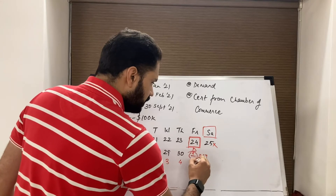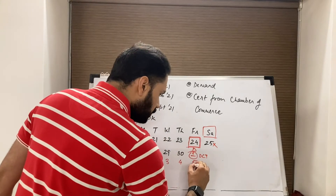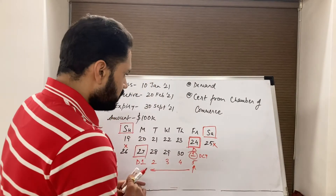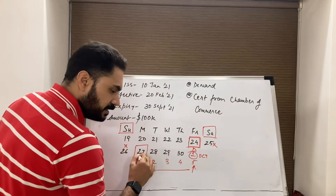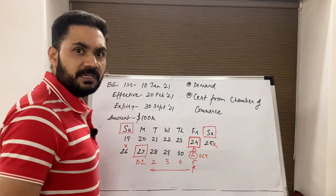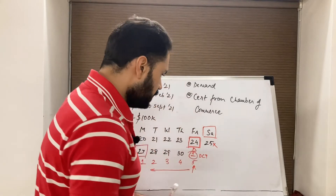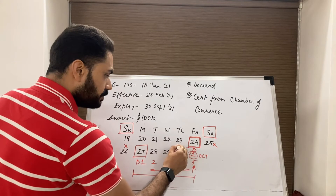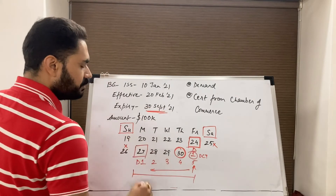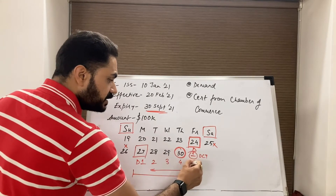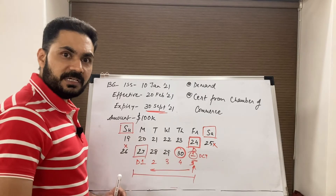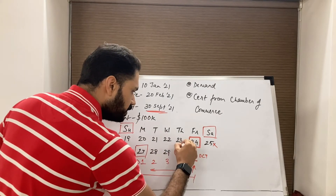The fifth business day will be 1st October. On or before 1st October, I must either make payment to the beneficiary or tell them that the demand is discrepant. So from the next day after a demand is presented, within five business days I must inform the beneficiary whether the demand is compliant or not. Importantly, this five-business-day period is not affected by the expiry of the guarantee — even if the guarantee expired on 30th September, I still have five business days.